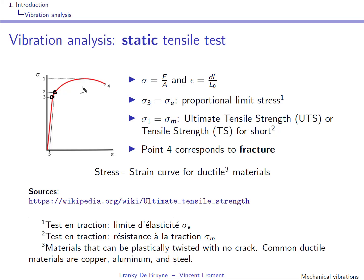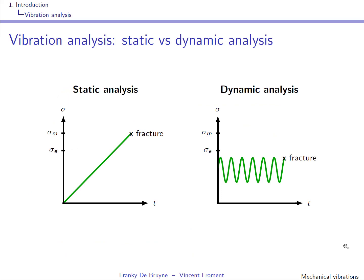The sigma at the peak, called the ultimate tensile strength or simply tensile strength, is the maximum stress that the material can withstand before breaking down. What we do here is compare a static analysis with a dynamic analysis. On the left side, you see that the stress is gradually increased very slowly until the stress goes above the tensile strength, and we know from the stress-strain curve that you have fracture.